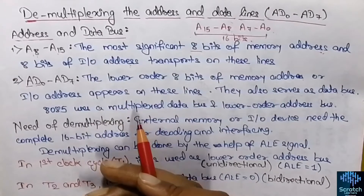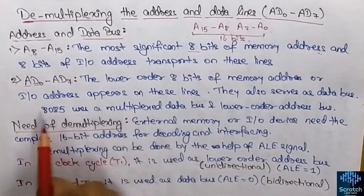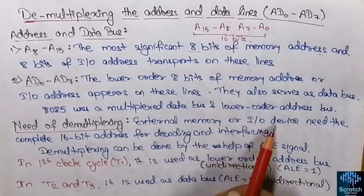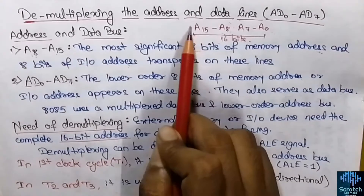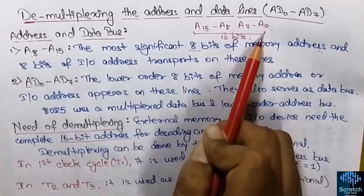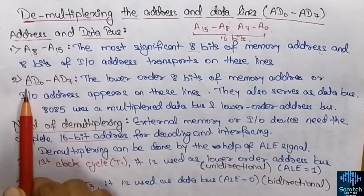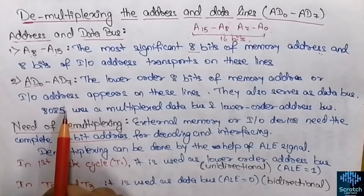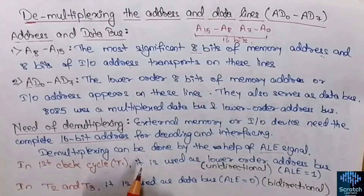Why do we need to demultiplex them? These bits are demultiplexed because the external memory or I/O device needs the complete 16-bit address for decoding and interfacing. To get all 16 bits, we need to demultiplex these lines so we can separately use the address lines as well as the data lines.